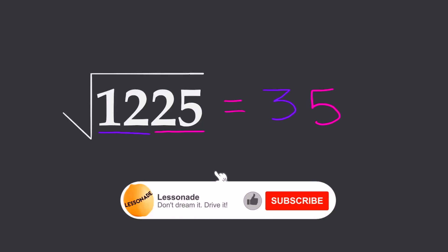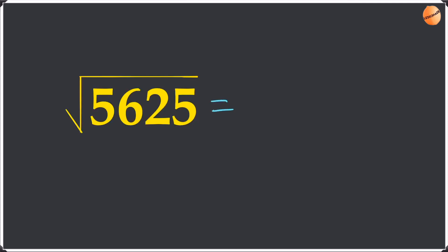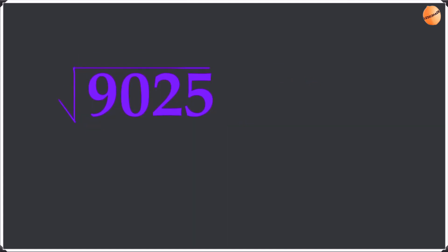Now let's do these a bit faster. For 5625, we just write the 5 straight away. Then for 56, the consecutive factor pair is 7 and 8 — choose the smaller one, which is 7 — and write the 7 in front. So the answer is 75.